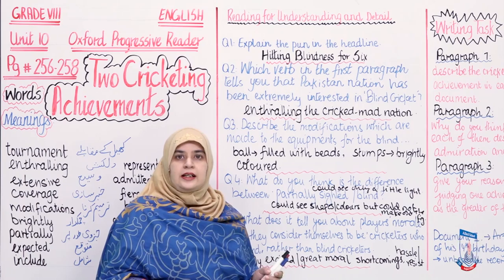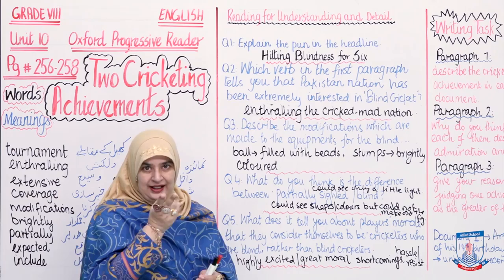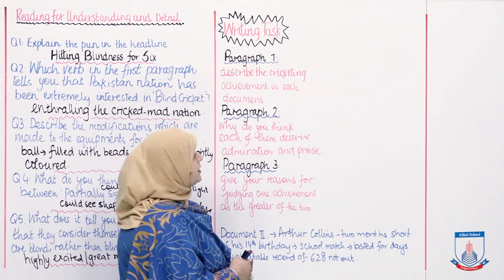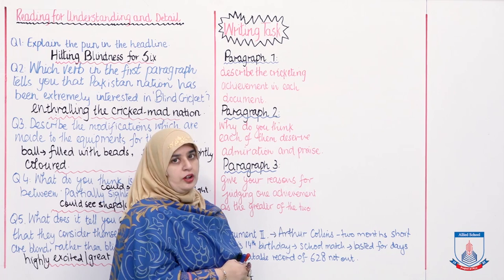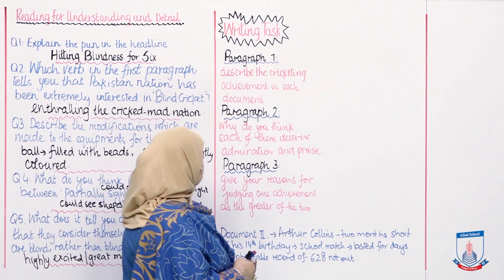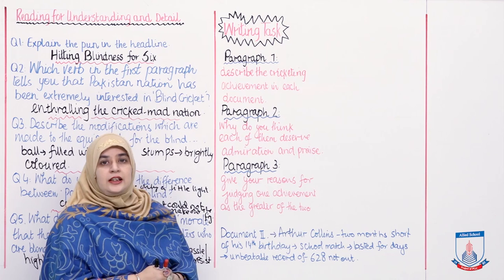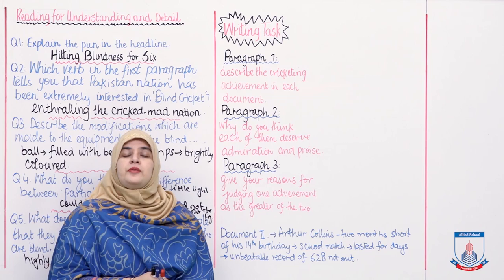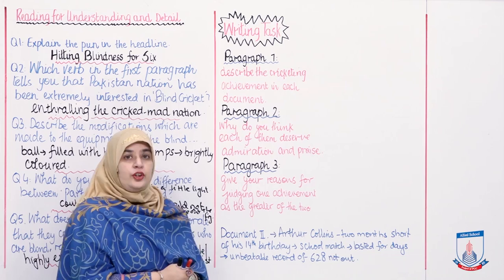Now I move on to the writing task. You have to write three paragraphs. In paragraph one, describe the cricketing achievement in each document. In paragraph two, explain why you think each of them deserves admiration and praise. In paragraph three, give your reasons for why one achievement is better than the other. In paragraph one, you are expected to describe the cricketing achievements of each document.